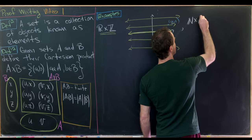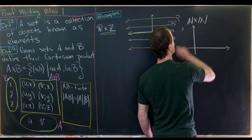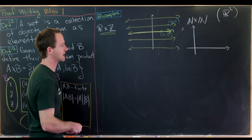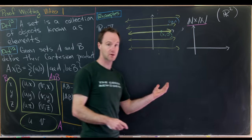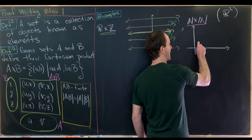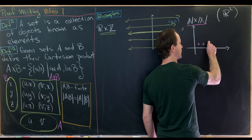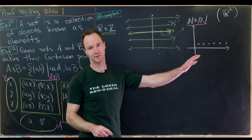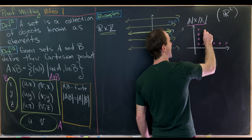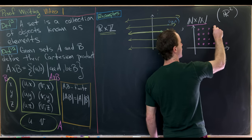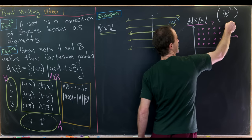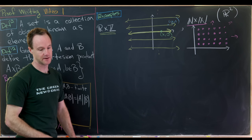For ℕ × ℕ, it again lives naturally within the Cartesian coordinate plane ℝ². All first coordinates are natural numbers and all second coordinates are natural numbers. So we'd have points like (1,1), (2,1), (3,1), (4,1), ..., and also (1,2), (1,3), (1,4), filling in all of these points. This forms a lattice going infinitely in both the horizontal and vertical directions.